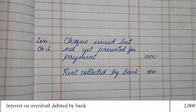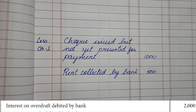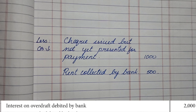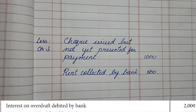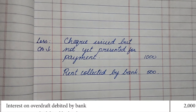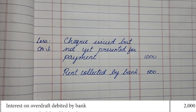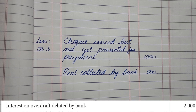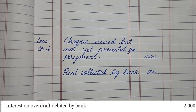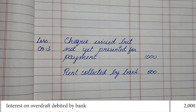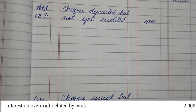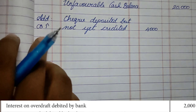Next is interest on overdraft debited by bank. Just as credit in a bank means deposit, debit in a bank means withdrawal. So the passbook is decreasing because the bank is charging interest on the overdraft balance the customer maintains. Since this is not recorded in the cash book, the cash book is relatively increasing, so we put this item in the Add category.